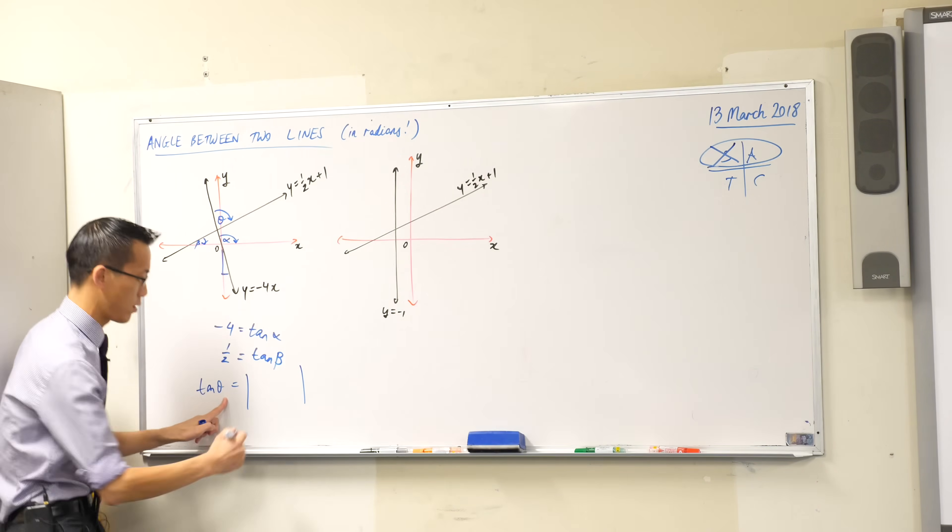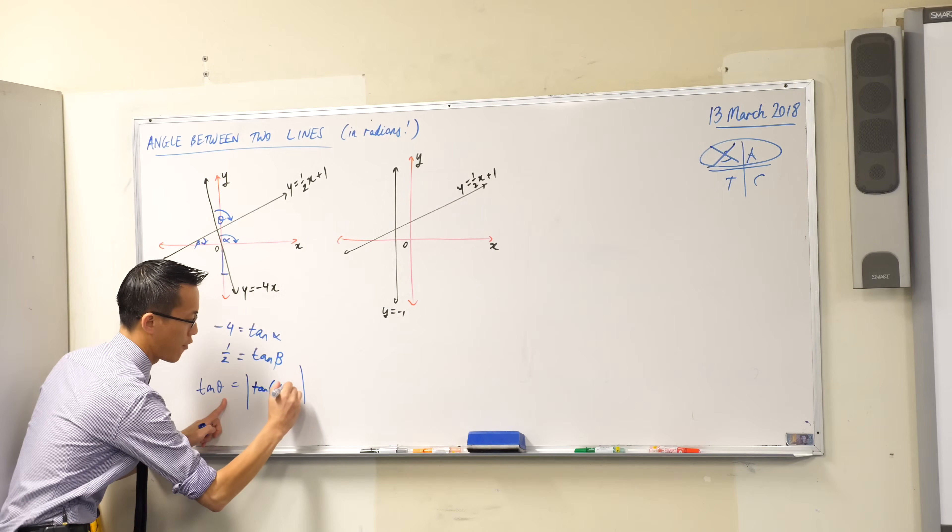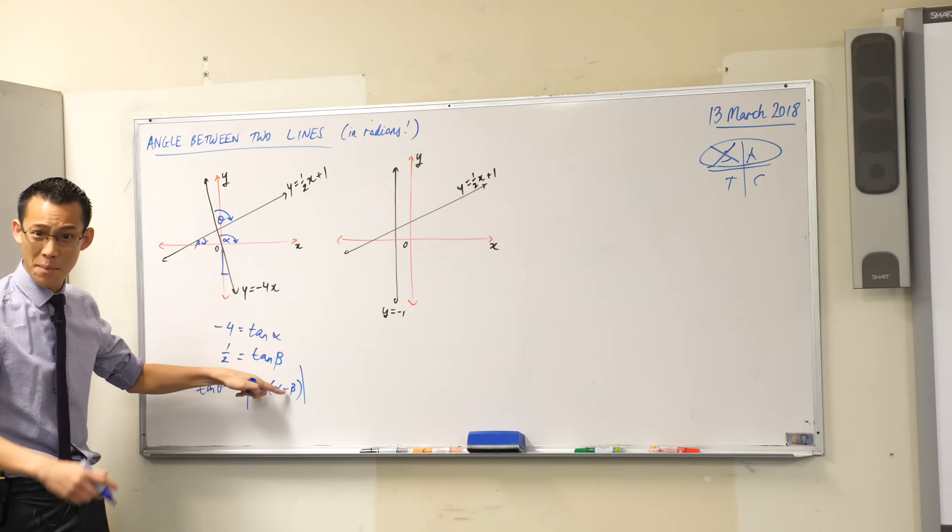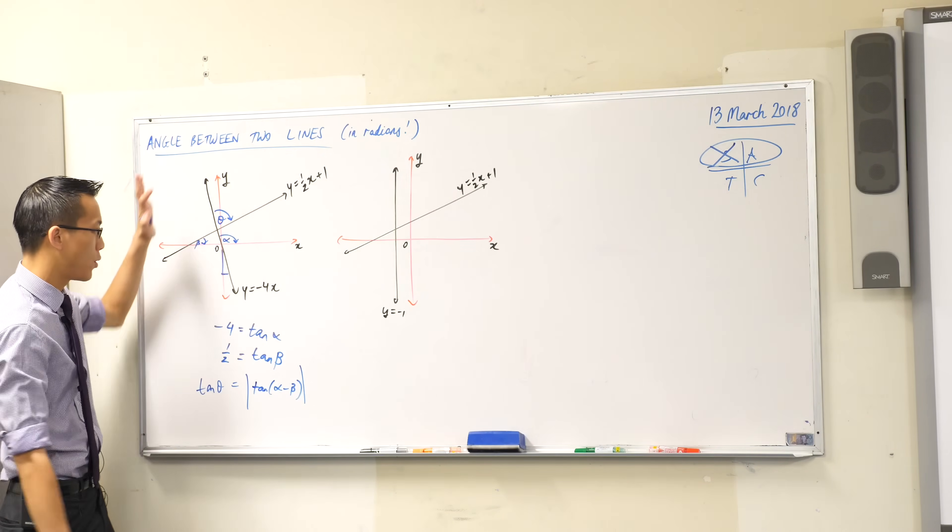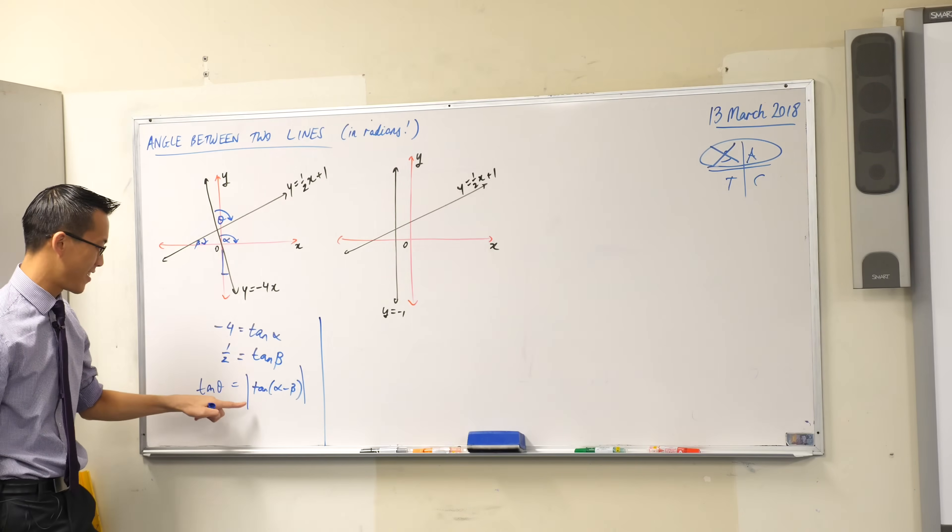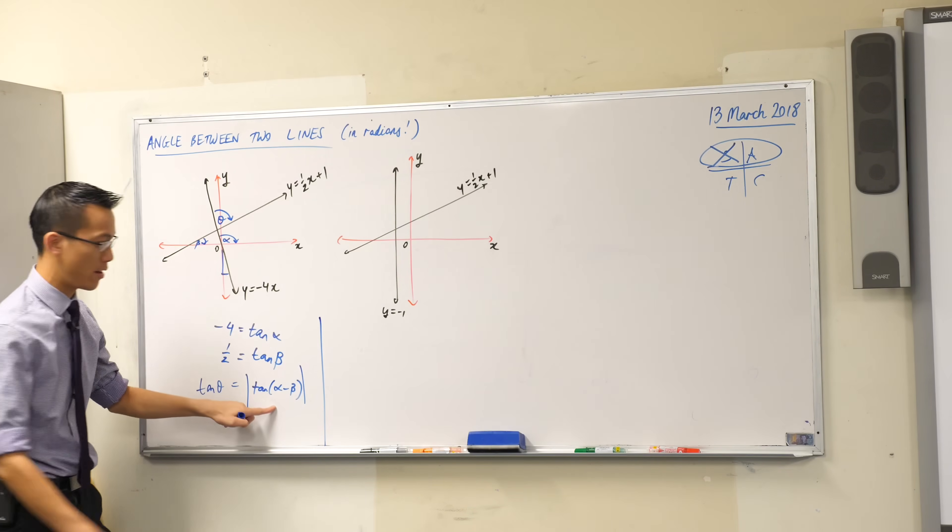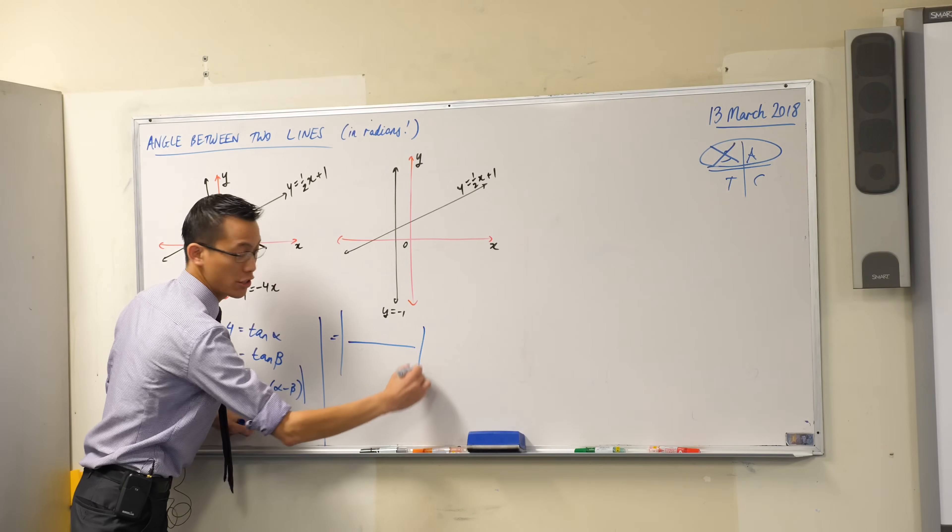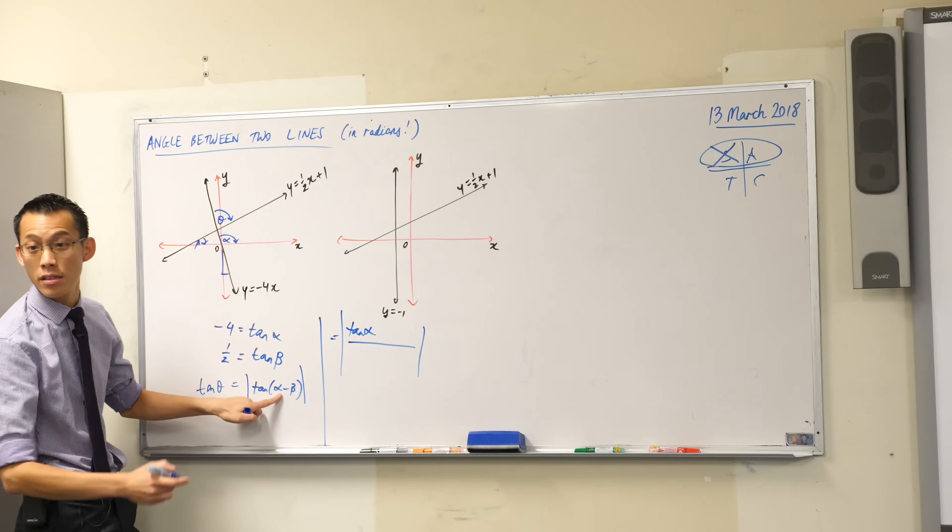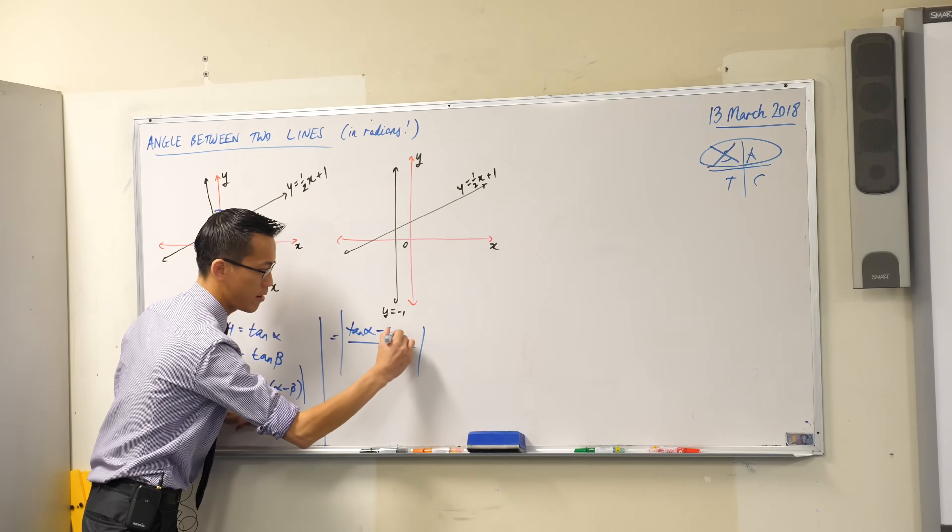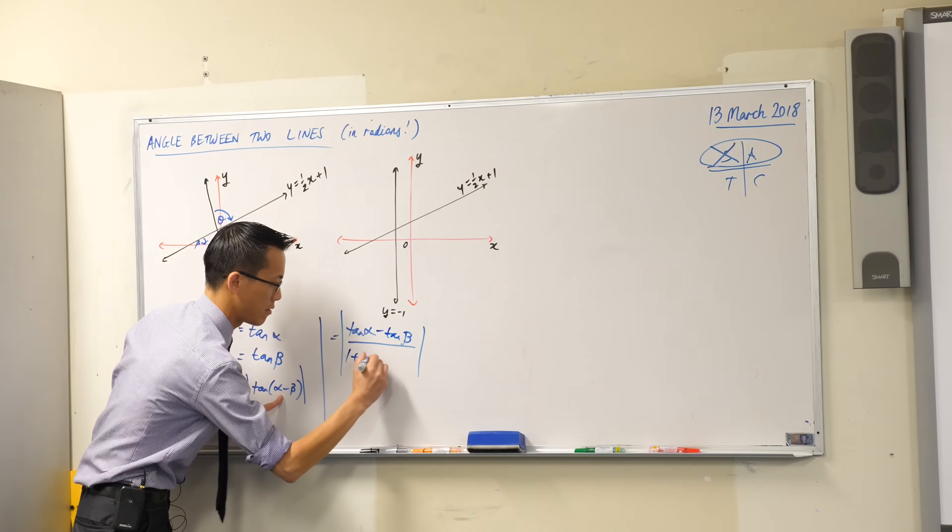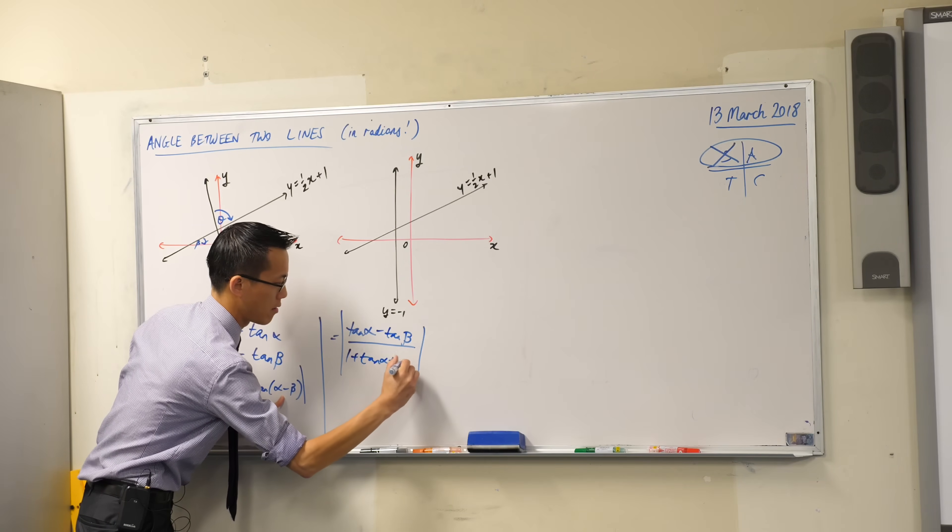So theta, we said, was the difference between those two angles, so it's alpha minus beta. But we have a trig expansion for this. Do you remember we reviewed it yesterday, all six were on the board? I planned out this board poorly, so let's just move over here. Think about what fraction you're going to get out of this. Tan alpha minus, the minus stays along on the numerator, and then you're going to get the opposite sign on the bottom. One plus.